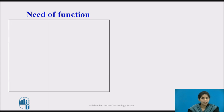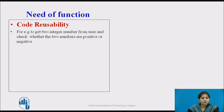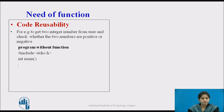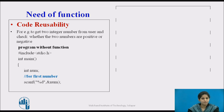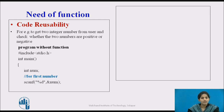Next, we see code reusability with an example: take two integer values from the user and check whether the numbers are positive or negative. Here, the program is shown initially without using a function. The first step is to include the essential header file. After that we start with the main function, declaring one integer variable to store the number, then getting values from the user using the scanf function. After that, we check whether the number is positive or negative using an if-else branching statement.